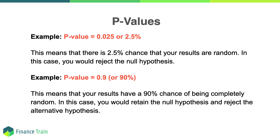For this reason, the smaller a p-value, the more significant your result. The smaller the p-value, the higher the evidence that you should reject the null hypothesis. Generally, a p-value below a significance threshold of 5 percent or 0.05 is considered statistically significant. If the p-value is below 0.05, you reject the null hypothesis. If it is above 0.05, you accept the null hypothesis.